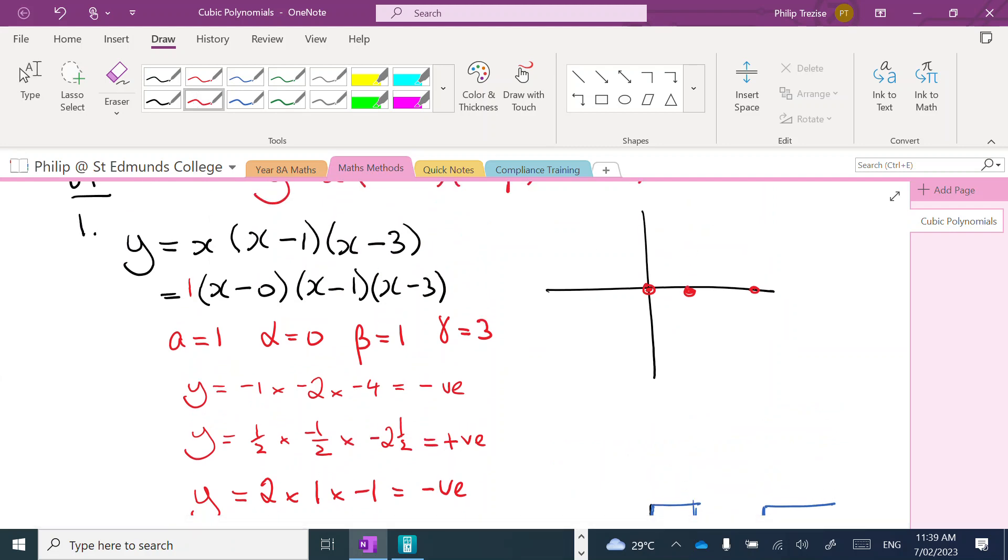And when I come to sketching this, it helps me to realize that I should have a graph that's increasing here through the origin. We have a local maximum, and back through this root, and a local minimum, and then off we go.